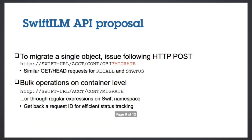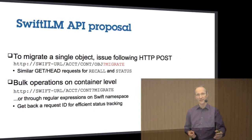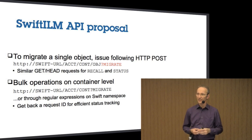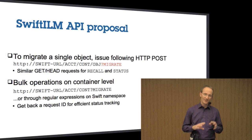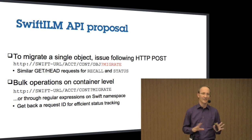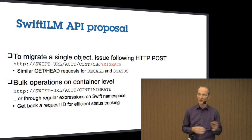From an API perspective, this would look like the following. We would just add a modifier to your Swift URL to migrate, recall, and get the status for your data. This is a little bit similar to what Amazon does to move data back and forth between S3 and Glacier.